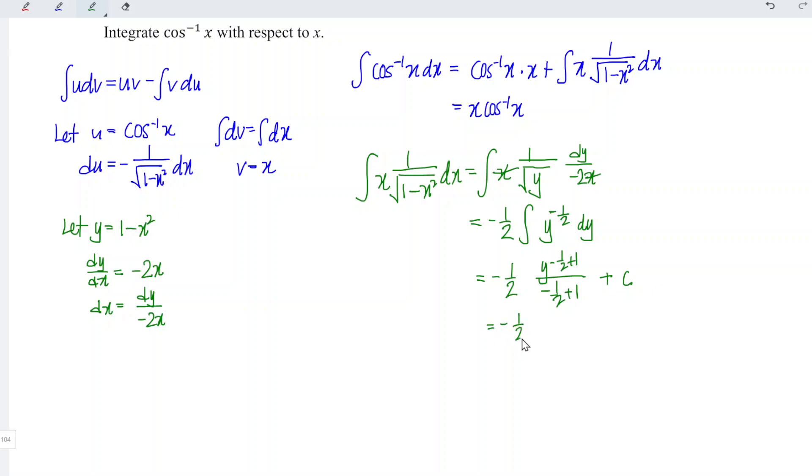And we can simplify now. So we have negative 1 over 2 times y to the power of minus 1 over 2 plus 1 becomes positive. So we have square root of y divided by also positive 1 over 2 plus c. 1 over 2 cancel with 1 over 2, so we're left with only negative square root of y.